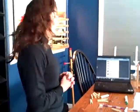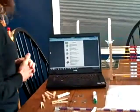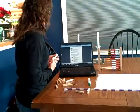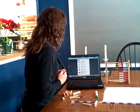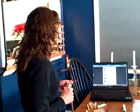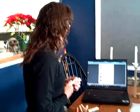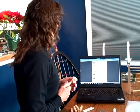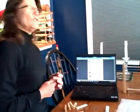The poem goes: 'My dad gave me one dollar bill because I'm his smartest son. And I swapped it for two shiny quarters because two is more than one. And then I took the quarters and traded them to Lou for three dimes — I guess he don't know that three is more than two. Just then along came old blind Bates, and just because he can't see, he gave me four nickels for my three dimes, and four is more than three. And I took the nickels to Hiram Coombs down at the seed feed store, and that fool gave me five pennies for them, and five is more than four. And then I went and showed my dad, and he got red in the cheeks and closed his eyes and shook his head — too proud of me to speak.'